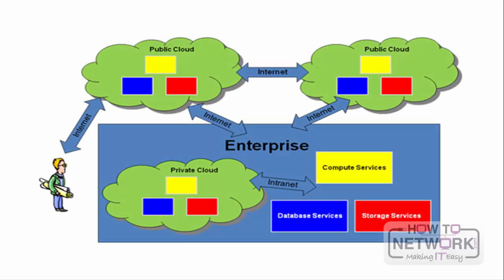In this picture, we can see one private cloud and two public clouds. A public cloud is one based on the standard cloud computing model, in which a service provider makes resources, such as applications and storage, available to the general public over the Internet. Public cloud services may be free or offered on a pay-per-usage model. The main benefits of using public cloud services are easy and inexpensive setup, because hardware, application, and bandwidth costs are covered by the provider.